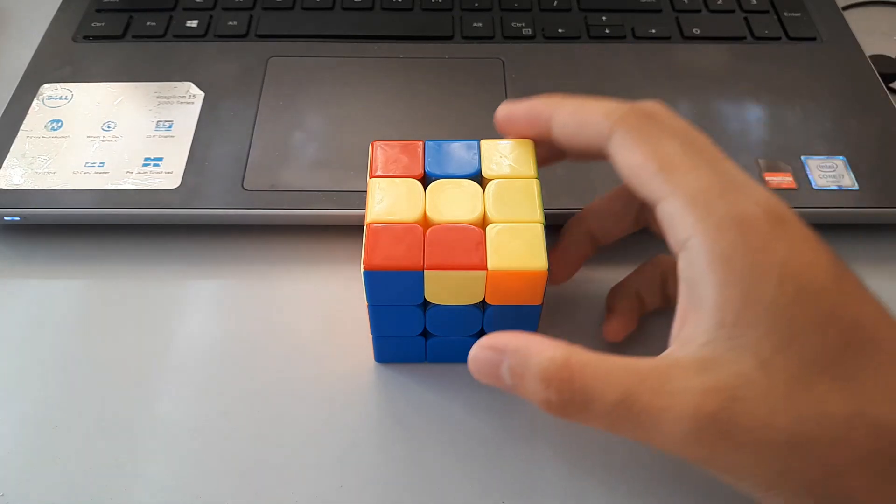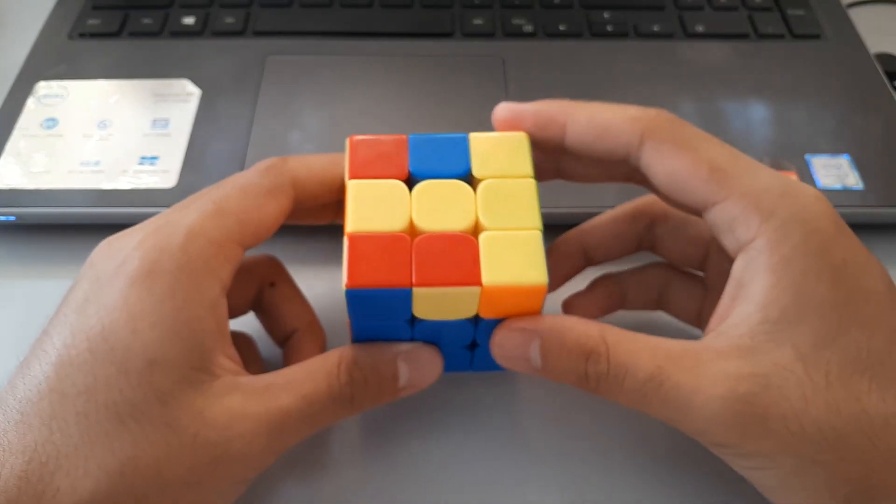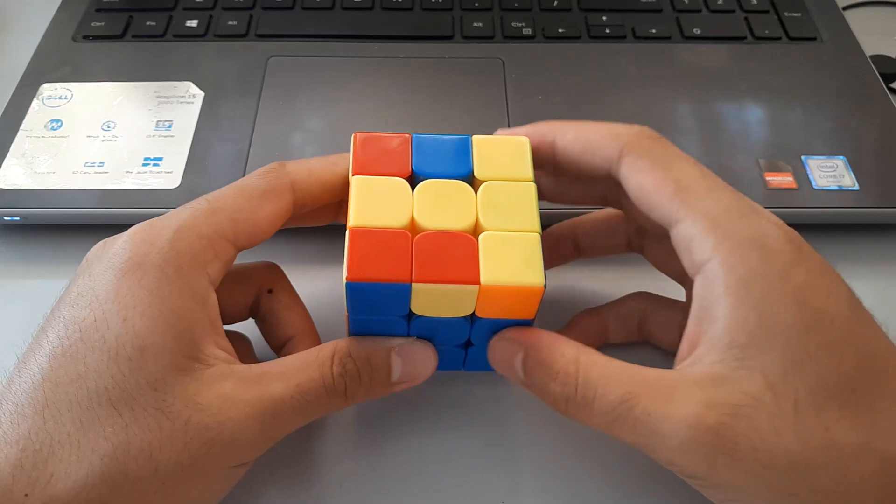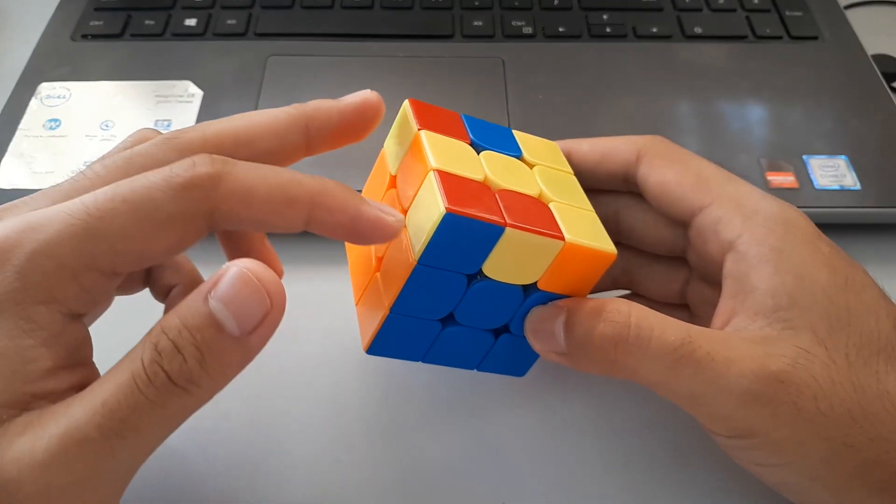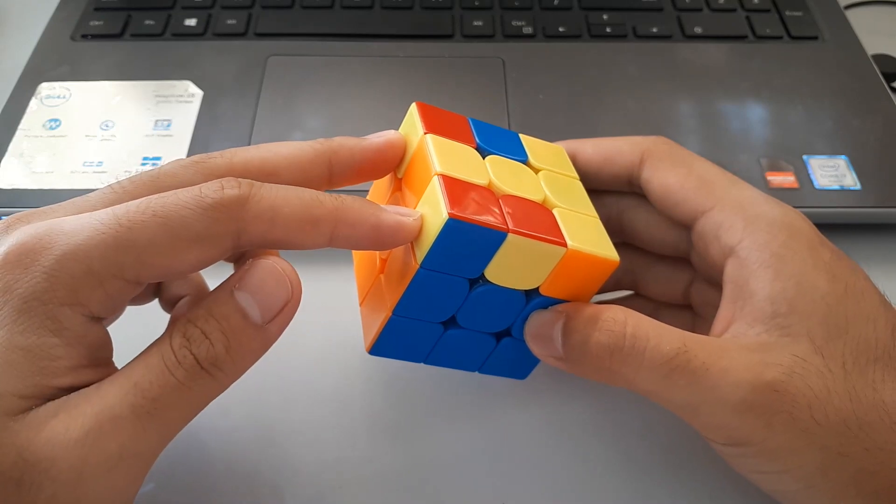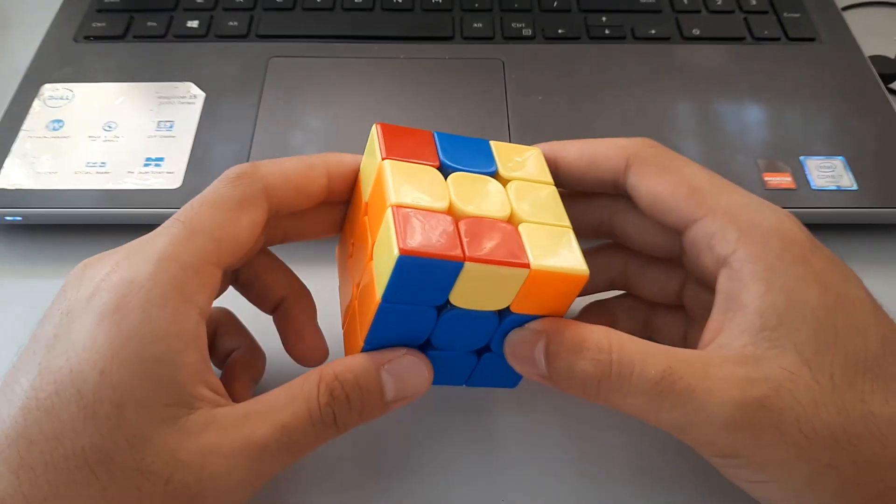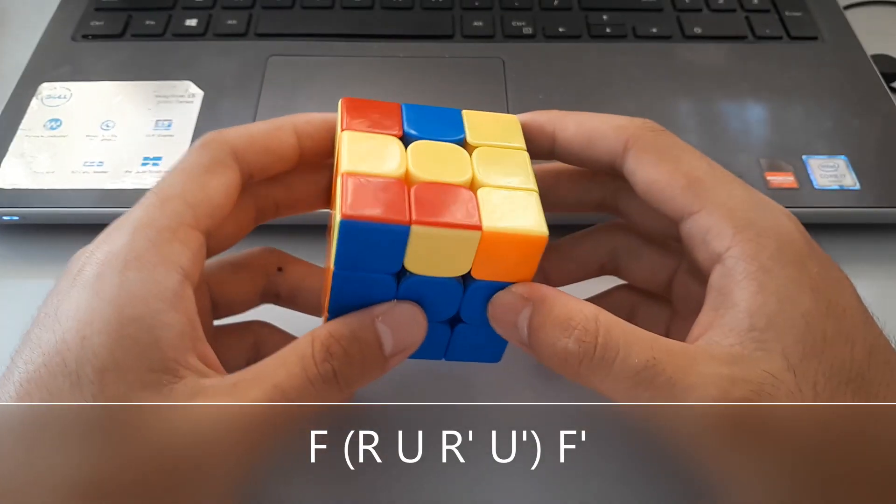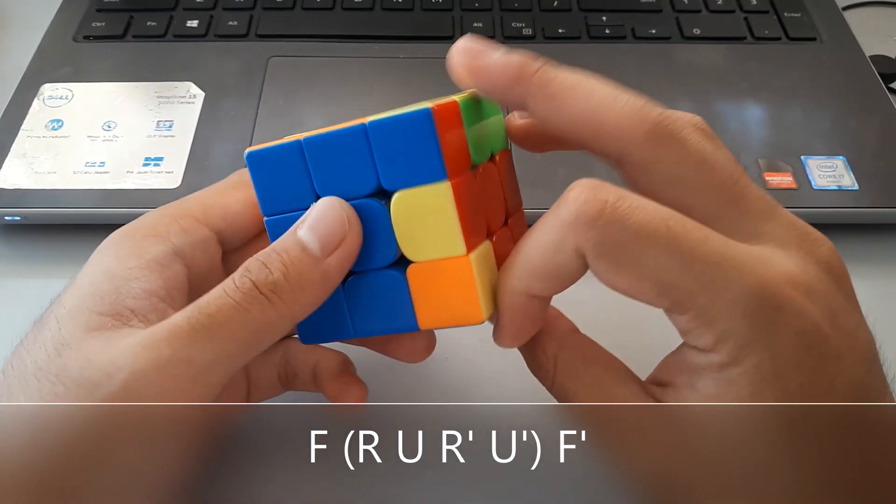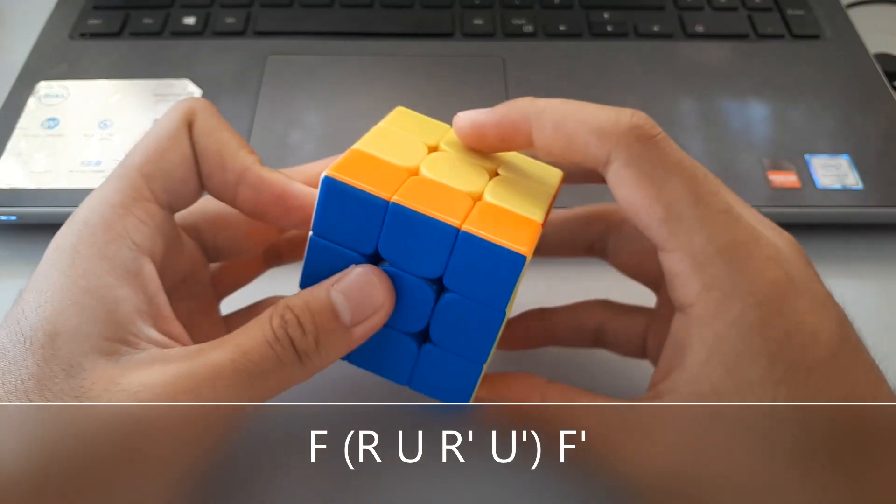The first case for the T shape is this one here, where we have the T and we want to hold it horizontally like this. This one has what's called headlights here, pointing towards the left. So this is the first case, and here's the algorithm. It's a fairly simple algorithm, it's just F, sexy, F prime.